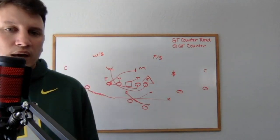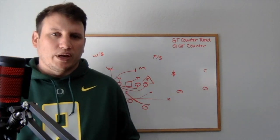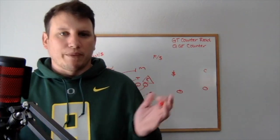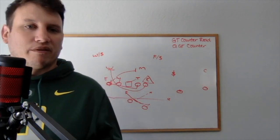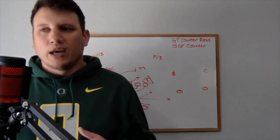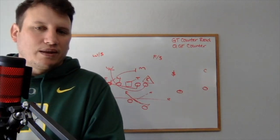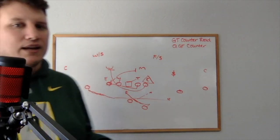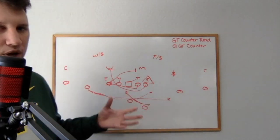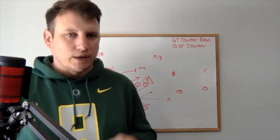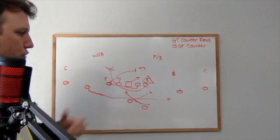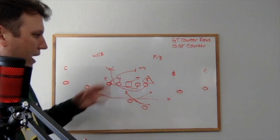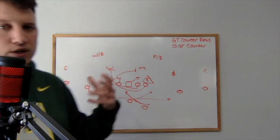If the defensive end plays out wide — jet motion tends to widen him — the quarterback gives to the running back and we go counter tray to the left. This is a great play if you've been running jet motion a lot or showing jet sweep on the front side enough that the defense starts to over-rotate. If they leave a hole and vacate the backside, it's a great time to go split flow and get the football on the backside with counter tray read.